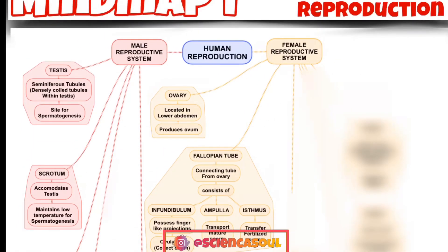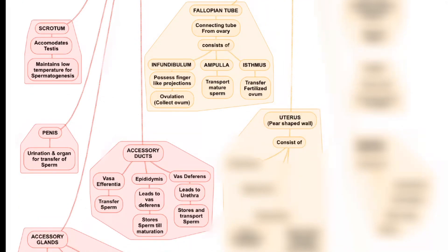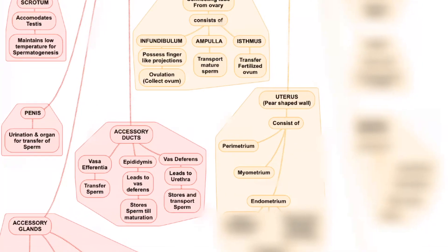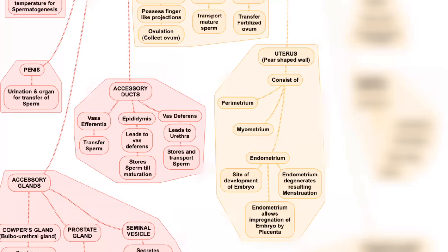Next is the uterus, which is pear-shaped and consists of perimetrium, myometrium, and endometrium. It is the site for development of the embryo. The endometrium allows implantation of the embryo by the placenta, and endometrium degeneration results in menstruation. A separate flowchart on menstruation will be made.